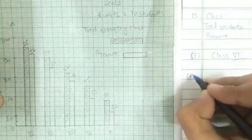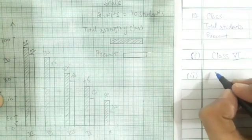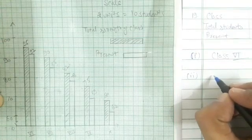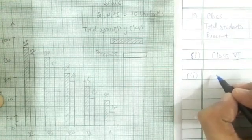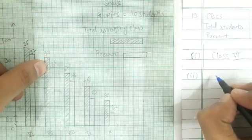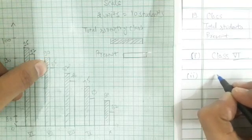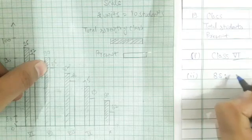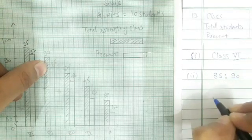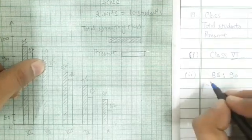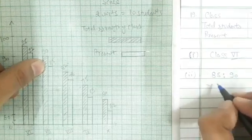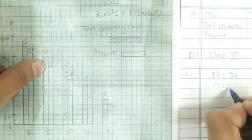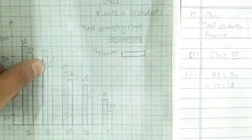The second question asks for the ratio of number of students present to total students of class 7. There are 85 students present and 90 total students. Dividing both 85 and 90 by 5 gives us 17 to 18, so the ratio is 17:18.